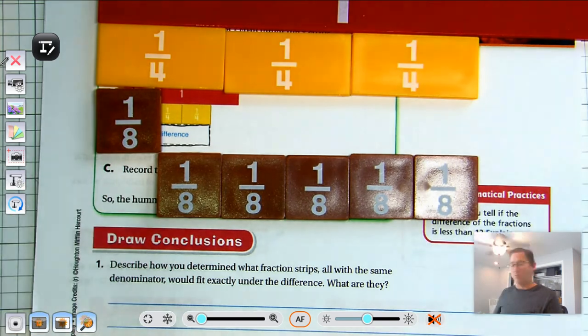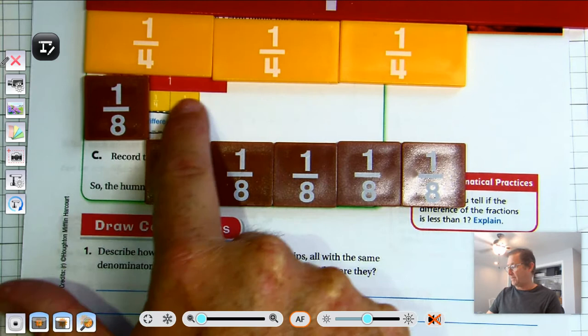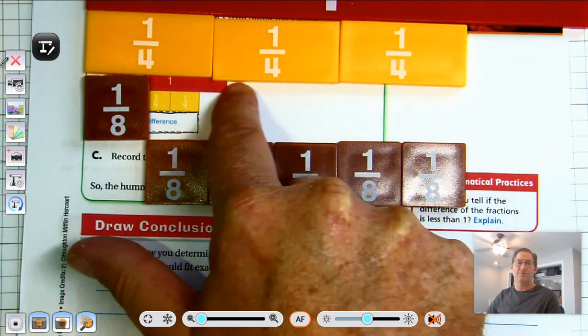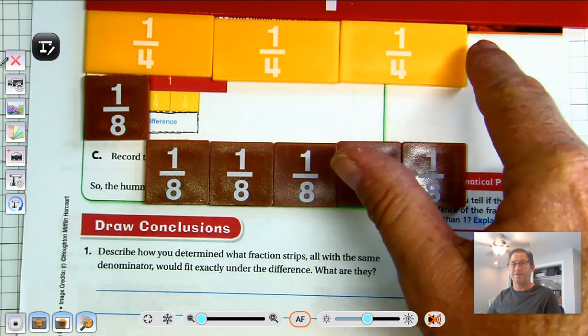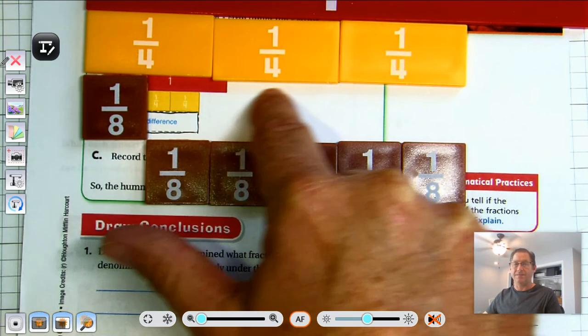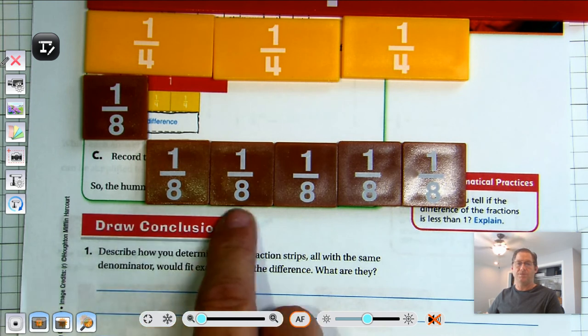Okay, so what's three-fourths take away one-eighth leaves us this difference. In other words, what is the difference between the end of three-fourths and the end of one-eighth? The difference is this empty space. So I can put one, two.